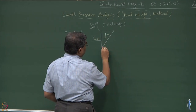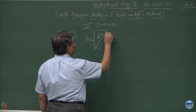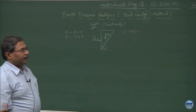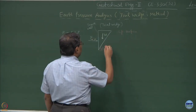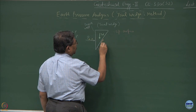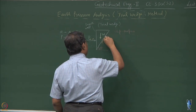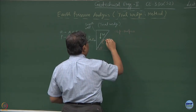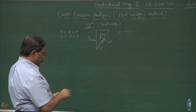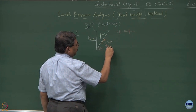What we wish to do is optimize the inclination of the slip surface. This is the slip surface about which failure takes place. We drew the free body diagram for this situation — this is the shear force getting mobilized, this is the normal on the slip surface, this is the normal component, and the resultant of the two is the reaction R.